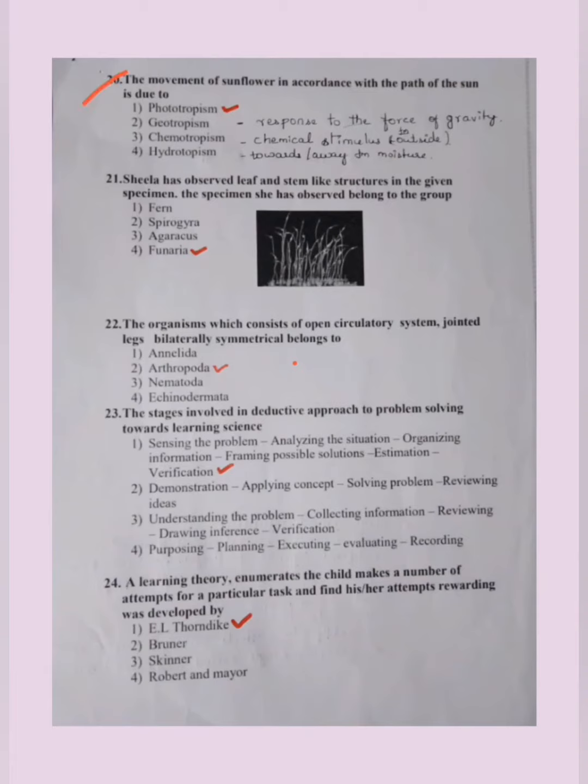The movement of sunflower in accordance with the path of the sun due to. If you have observed, the sun in the morning till noon will face towards the direction of the sun, that is east. Evenings they will slightly bend towards the west due to the movement of the sun. Actually sun is not moving, earth is moving, but in accordance with the relative motion when we watch from here it seems like that. When the sun is at west, sunflowers also face towards the sun. It's because of stimuli from the light. Sunflower faces the sun. That term is called phototropism.